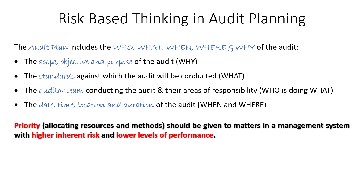If you're auditing a vendor — doing a supplier quality audit — and they have a history of a particular nonconformance, or their past audits have not gone well in the area of CAPA, that's an area of poor performance. Inherently, you could also argue that CAPA has an inherently higher risk: if you're ineffective in the way you address issues and solve problems, that can be risky for your business. So when structuring your audit, you can give priority to topics that have inherently high risk or inherently low performance levels historically.